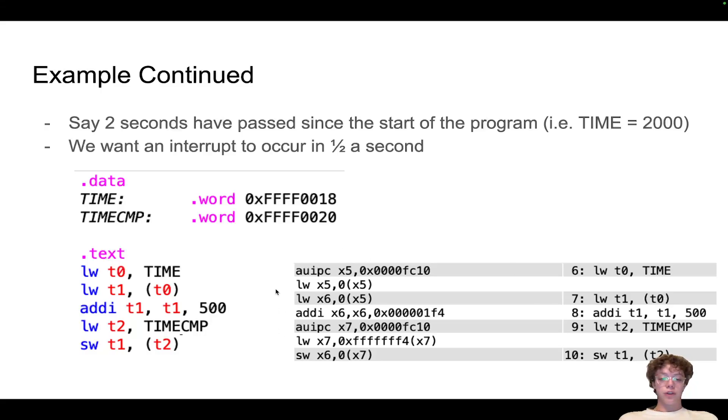Then over here you can see this is the assembled code, exactly what was over here, but over here now it's actually been assembled. So you can see here this load word is also a pseudo instruction. What it's doing here is it's trying to put this value into t0, right? And it does this in two instructions.